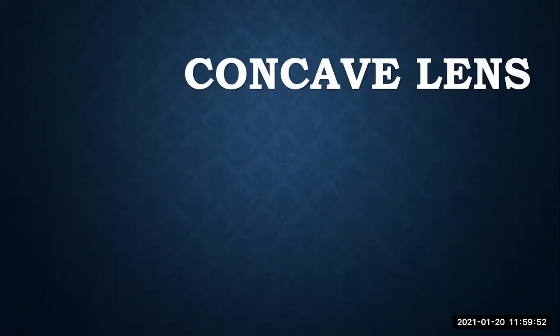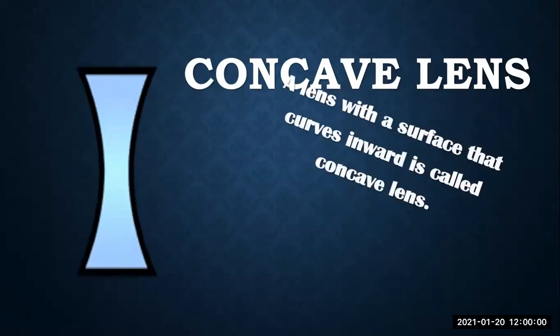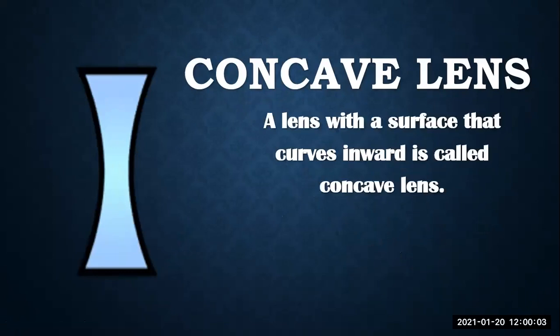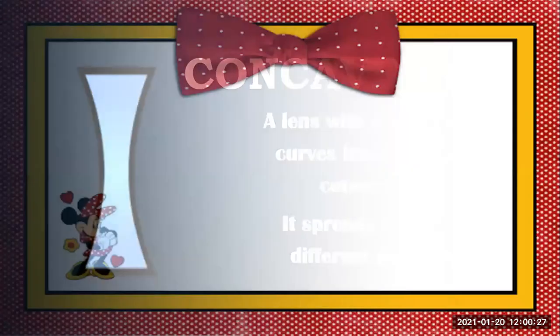Another type is the concave lens. A lens with a surface that curves inward is called a concave lens — it is opposite to the convex lens. The concave lens spreads the light in different directions, whereas the convex lens collects the light at a point.